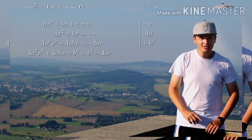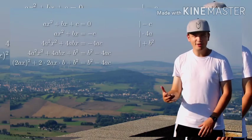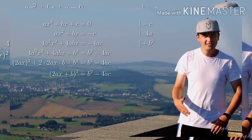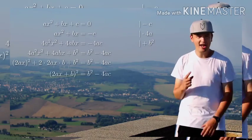But don't be scared. Just take a close look to the left side and you see there's a binomial formula with 2ax and b. So all together this is the square of 2ax plus b, and now we have only one x.